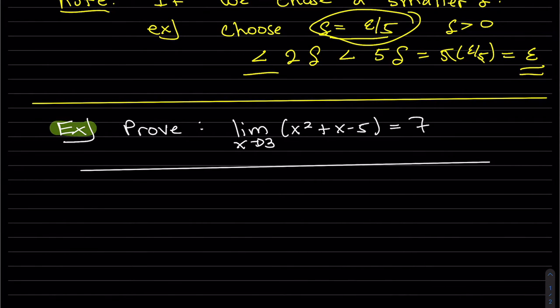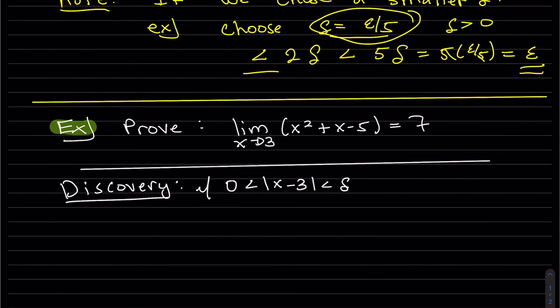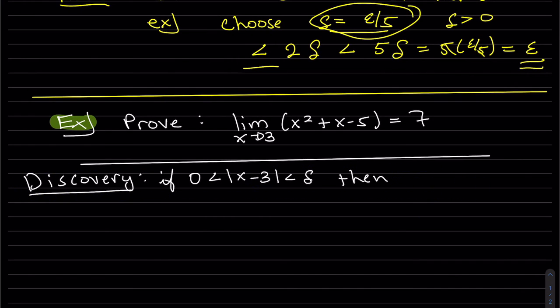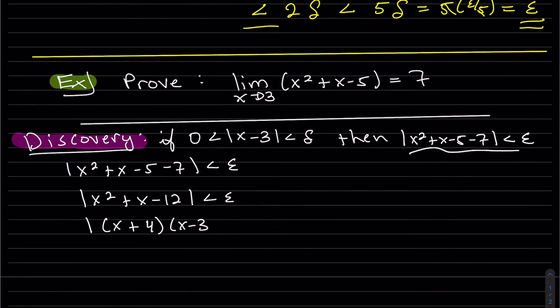So we're going to start off with our discovery. And let's write it out. If this, then this. So let's go ahead and work backwards. That's what we're trying to prove. So let's work backwards. So it looks like we have that one bounded already, but this one needs bounded to finish our proof.